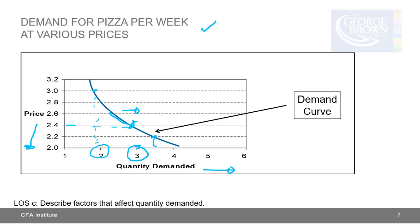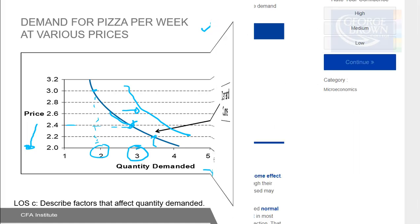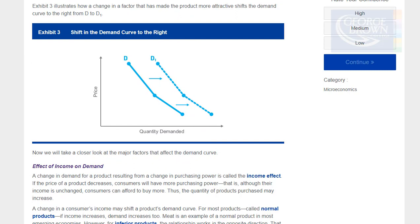Changes in the demand curve are based on factors other than the price of the product or service. A big driver of shifts in the demand curve is income. If income is rising, then for each price level, the quantity demanded will increase. Exhibit 3 in the chapter illustrates how a change in a factor that has made the product more attractive shifts the demand curve to the right from D to D1. We'll take a closer look at the major factors that affect the demand curve.